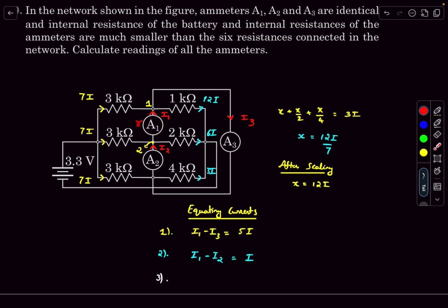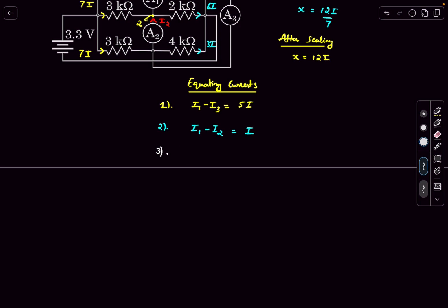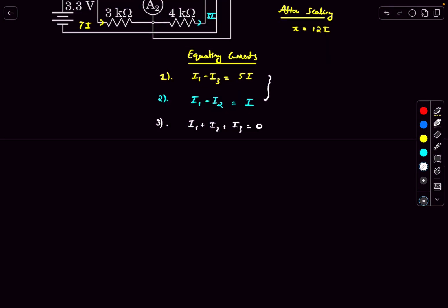And the potential drop across A2 is i2 small r, and across A3 is i3 times small r. So if we apply KVL over there we'll get i1 plus i2 plus i3 equals 0. So the small r just gets cancelled out. So these two equations are applying KCL and this equation is by applying KVL.